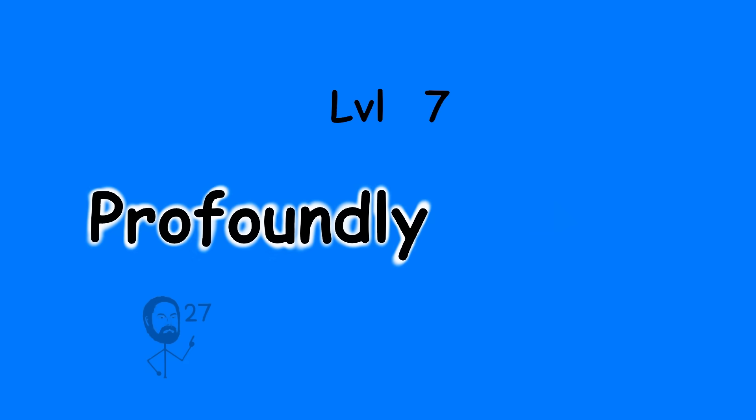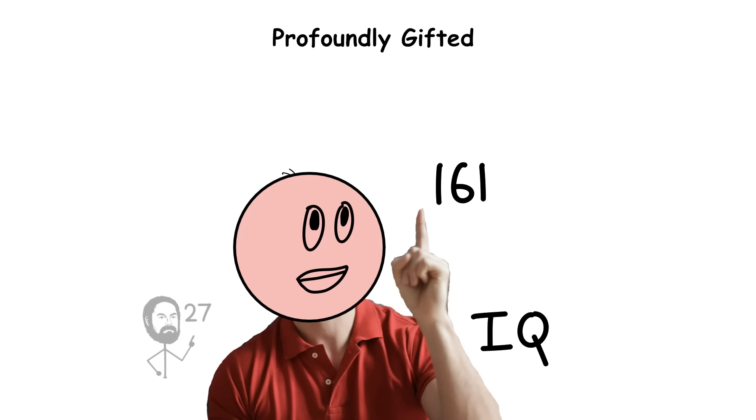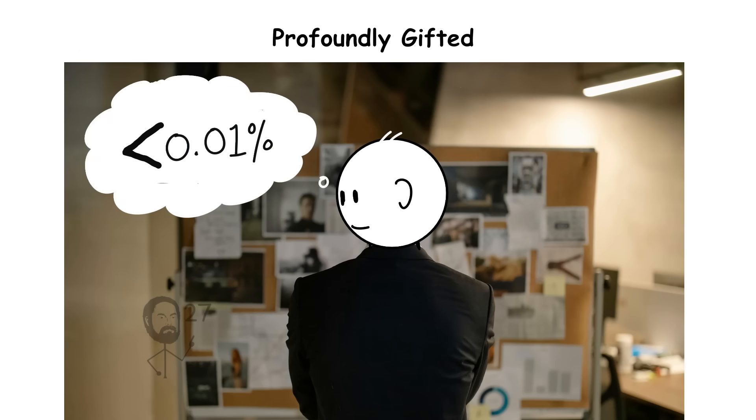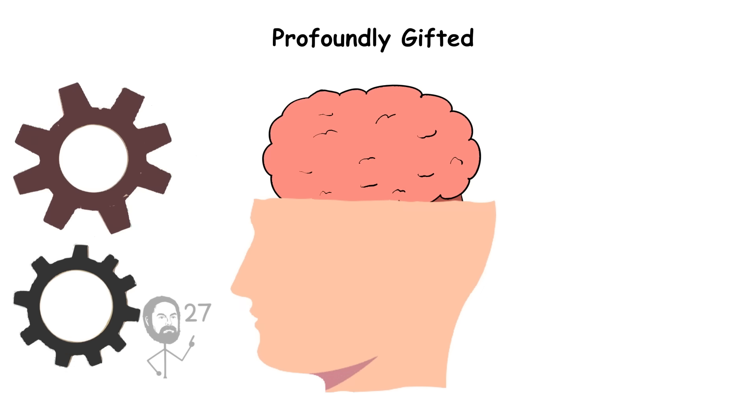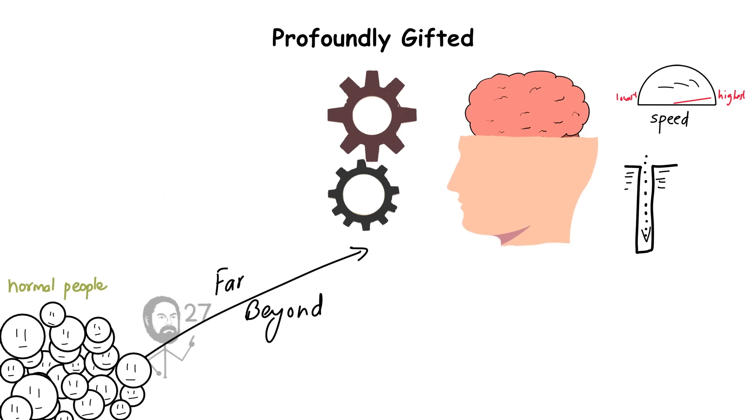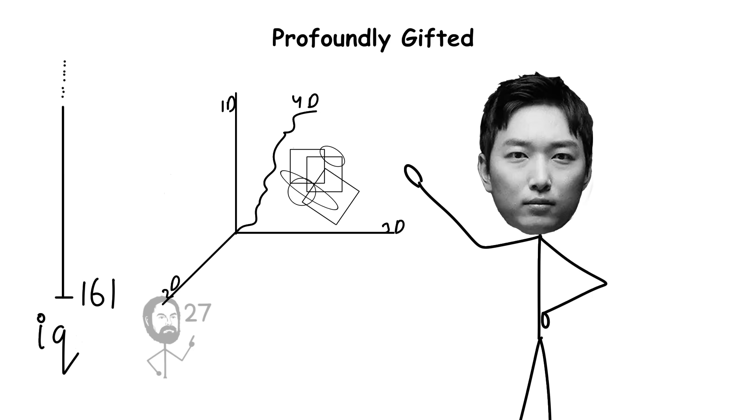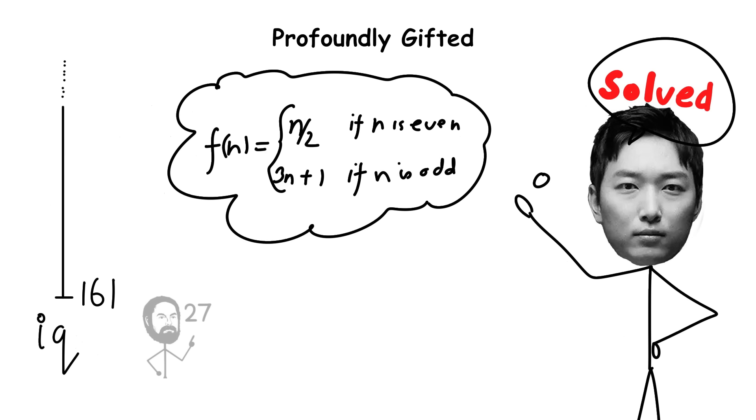Level 7. Profoundly gifted IQ 161 and above. An IQ of 161 or higher places an individual among the rarest cognitive profiles known, less than 0.01% of the global population. At this level, intellectual functioning operates at a depth and speed far beyond ordinary human experience. People within this range can handle abstraction in multiple dimensions simultaneously, identify patterns invisible to others, and form solutions to problems that appear unsolvable to most minds.